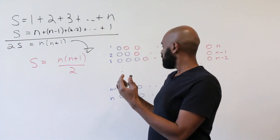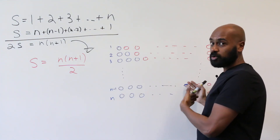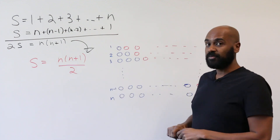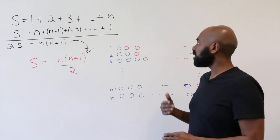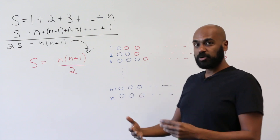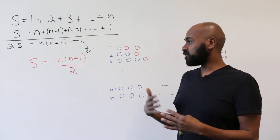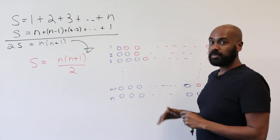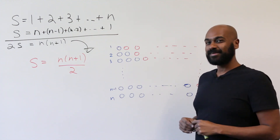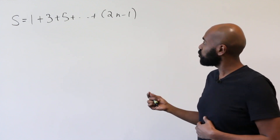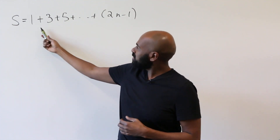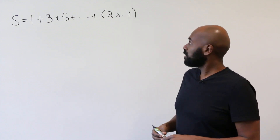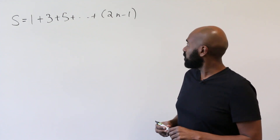We see the connection between this pictorial proof and the algebraic one — both avoid induction. Let's look at another typical problem used to introduce mathematical induction that has a pictorial proof avoiding induction as well. In this problem, we're given a positive integer n and asked: what is the sum of the first n odd positive integers?